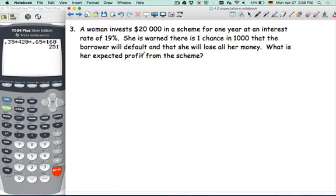A woman invests $20,000 in a scheme for one year at an interest of 19%. She is warned there is one chance in 1,000 that the borrower will default and that she will lose all her money. What is her expected profit from the scheme? I like making tables, so I'm going to do that. It's a nice way to list the whole sample space.